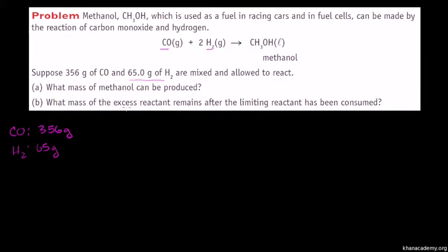And then they say, what mass of the excess reactant remains after the limiting reactant has been consumed? So that tells you this is a limiting reactant problem — we have too much or too little of one of these two reactants. The one that we have less of is the limiting reactant; that'll dictate how much product we can produce. And the one that we have more of is the excess reactant.